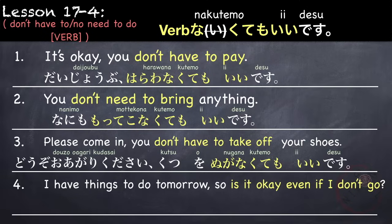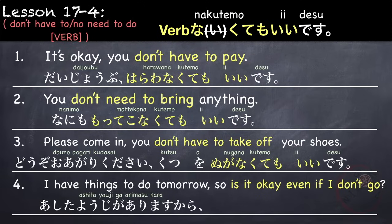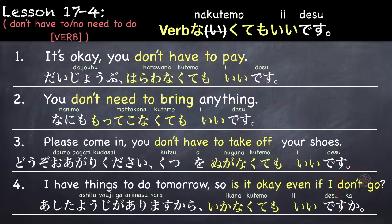Last example: 'I have things to do tomorrow, so is it okay if I don't go?' Ashita yoji ga arimasu kara, watashi wa ikanakute mo ii desu ka. The verb ikimasu becomes ikanai, remove i, add nakute mo ii desu, and we add ka to make it a question. Ashita yoji ga arimasu kara, watashi wa ikanakute mo ii desu ka.